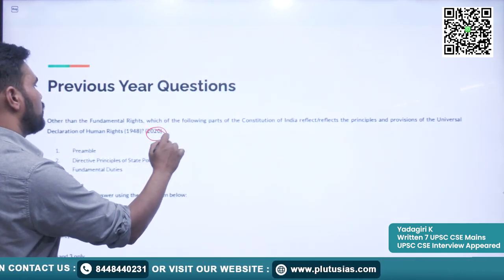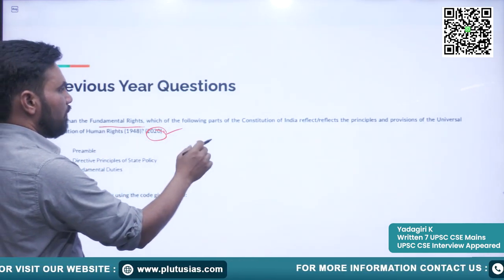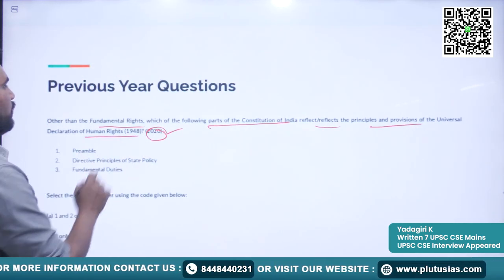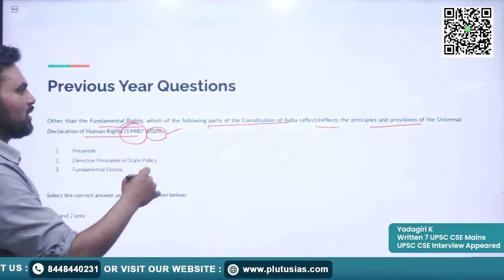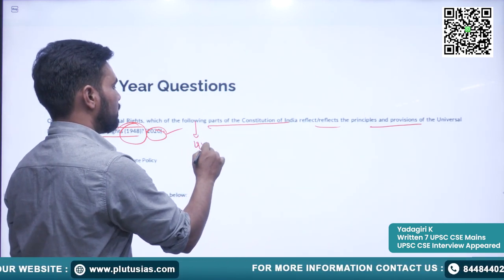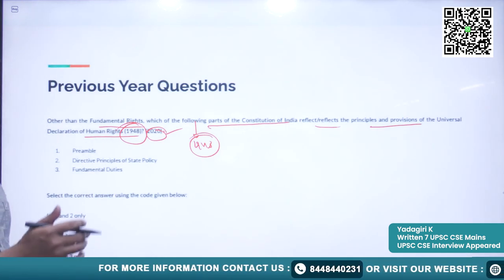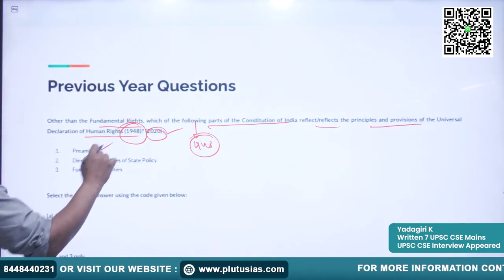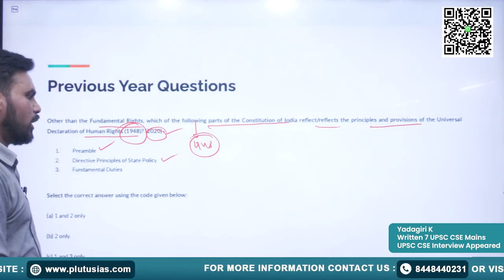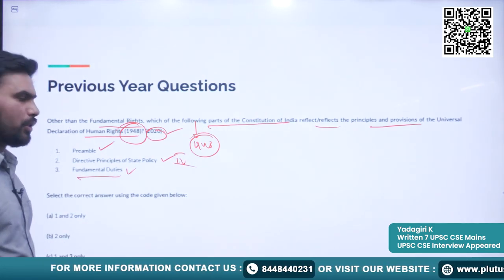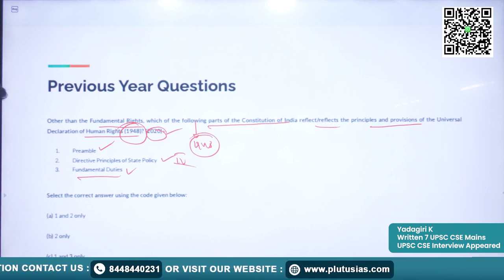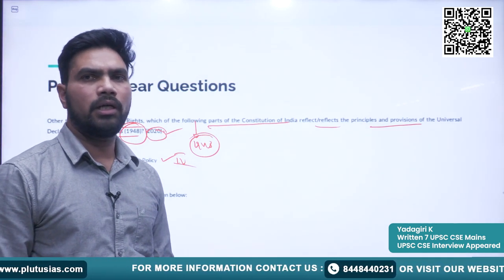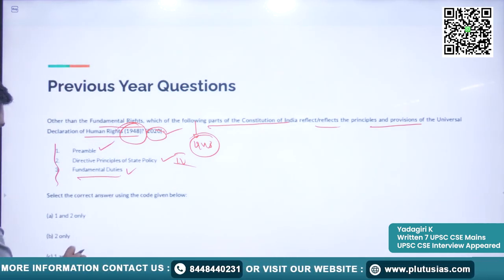Another question also from 2020: 'Other than fundamental rights, which of the following parts of the constitution reflect the principles and provisions of the Universal Declaration of Human Rights declared in 1948?' The options are: (1) Preamble; (2) Directive Principles of State Policy in Part 4; (3) Fundamental Duties. The correct answer is D — 1, 2, and 3 — as all three reflect the principles of the 1948 Declaration of Human Rights.